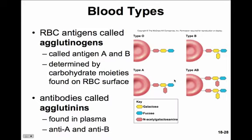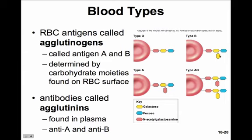Red blood cell antigens called aglutinogens — antigen A and antigen B — are determined by carbohydrate moieties found on the red blood cell surface. In type O blood, the aglutinogen chain ends in a galactose and a fucose. Type A blood expresses a different side group: N-acetylgalactosamine. Whereas type B blood cells present another galactose hanging off the side.